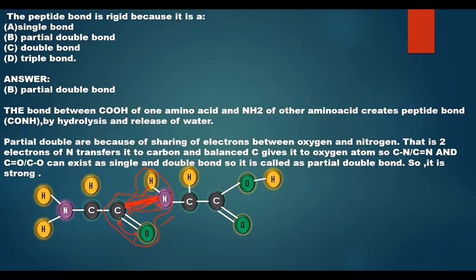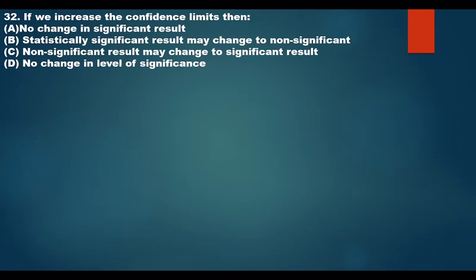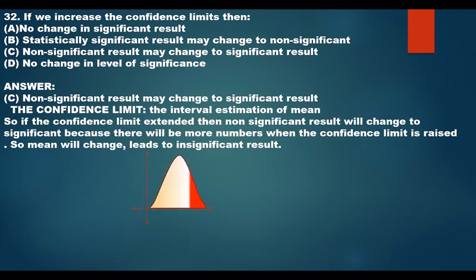If we increase the confidence limits, a non-significant result may change to a significant result. The confidence limit is the interval estimation of the mean. When the confidence limit is extended, more numbers are included, changing the mean of the sequence, which can lead a previously non-significant result to become significant.